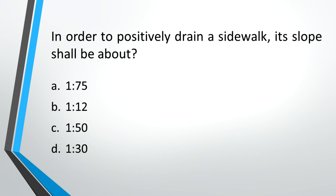In order to positively drain a sidewalk, its slope shall be about? A: 1:75, B: 1:12, C: 1:50, D: 1:30. Answer: C, 1:50.